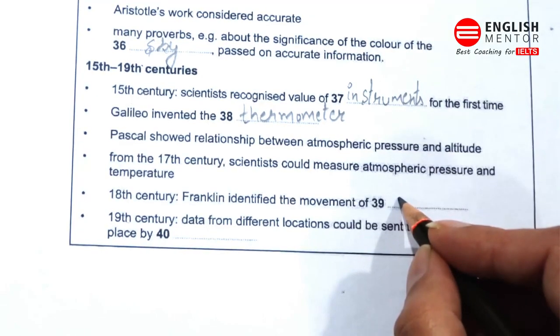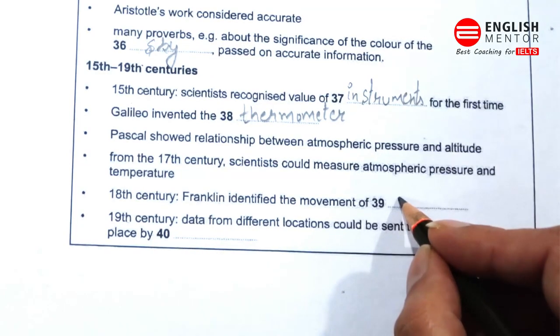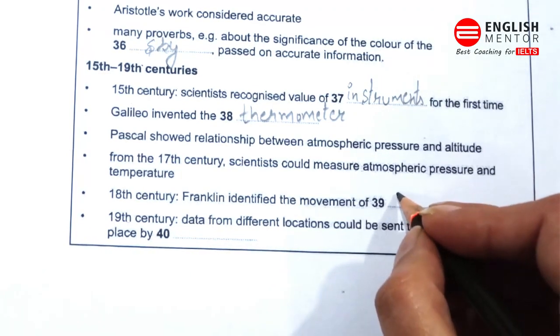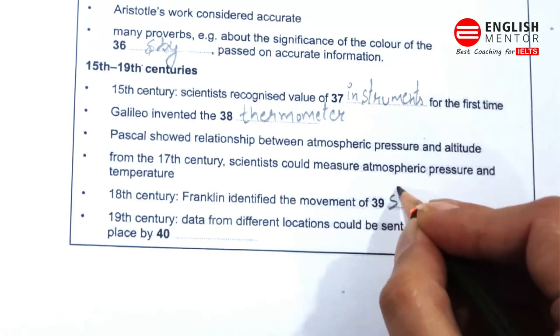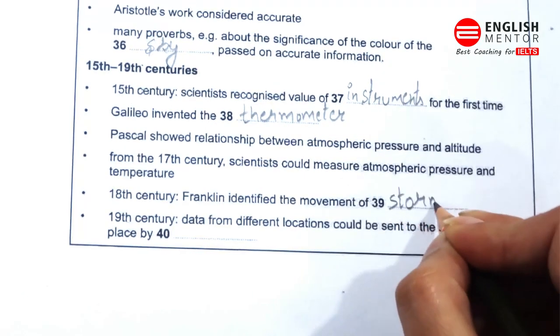In the 18th century, the scientist and politician Benjamin Franklin carried out work on electricity and lightning in particular, but he was also very interested in weather and studied it throughout most of his life. It was Franklin who discovered that storms generally travel from west to east.